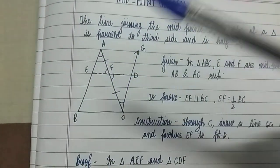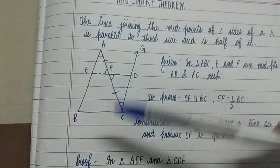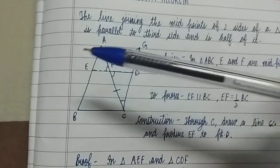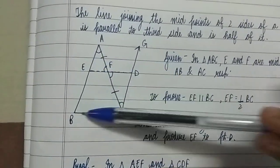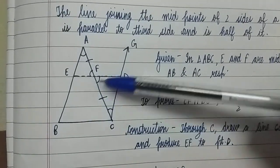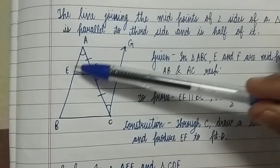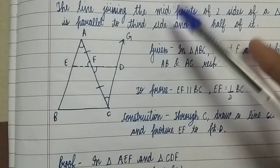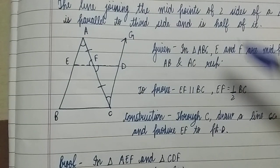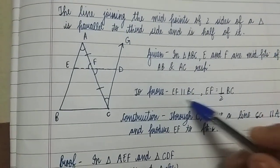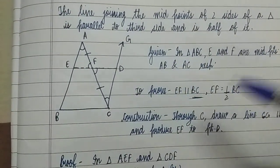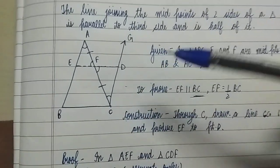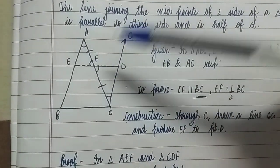Now, ED is parallel to BC because these are opposite sides of the parallelogram. EF is part of ED, which means EF is parallel to BC. So we have proved the first part: EF is parallel to BC.